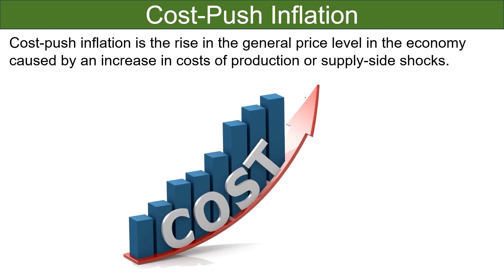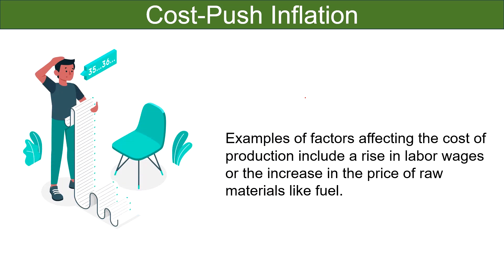Moving on to cost-push inflation. Cost-push inflation is the rise in the general price level in the economy caused by an increase in the cost of production or supply side shocks. Higher cost of production results in increased prices, leading to a decrease in aggregate demand. Aggregate supply is the quantity of goods and services supplied by firms. Examples of factors affecting the cost of production include a rise in labor wages or the increase in the price of raw materials like fuel. Cost-push inflation may also be caused by depletion of natural resources, monopoly, and so on. An example can be seen in the energy sector, i.e., oil and natural gas prices.